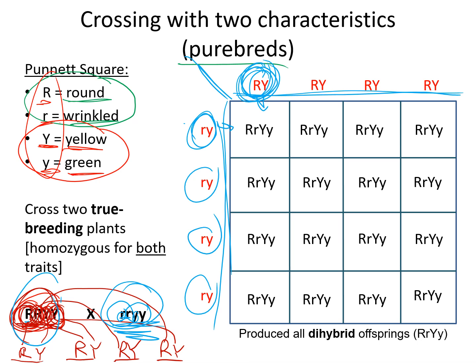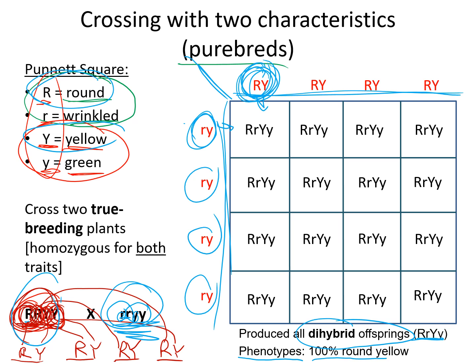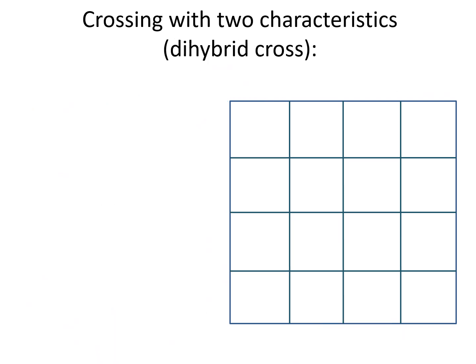This produces all dihybrid offspring — they have one gamete from each parent that is different from the other parent, so we call them hybrids. In this case they are heterozygous for both characteristics. The phenotypes: they have one dominant R and one recessive r, but dominant is expressed; they also have the dominant yellow gene. So the phenotypes are 100% round yellow peas.